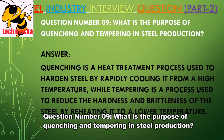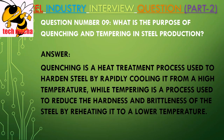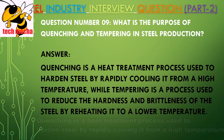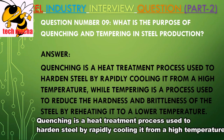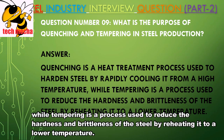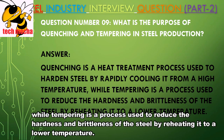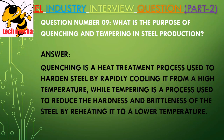Question Number 09: What is the purpose of quenching and tempering in steel production? Quenching is a heat treatment process used to harden steel by rapidly cooling it from a high temperature, while tempering is a process used to reduce the hardness and brittleness of the steel by reheating it to a lower temperature.